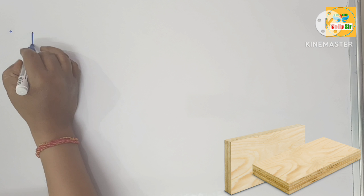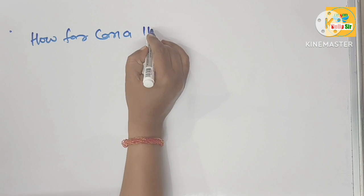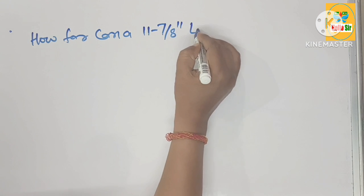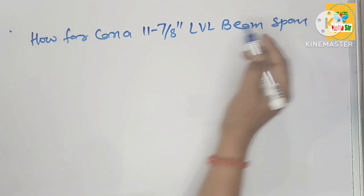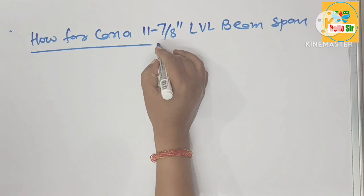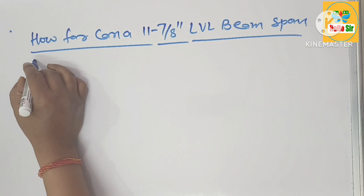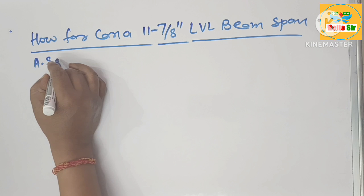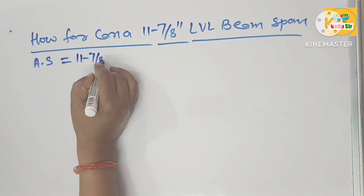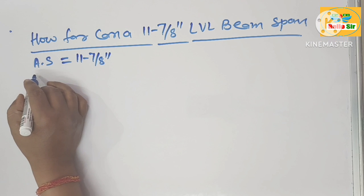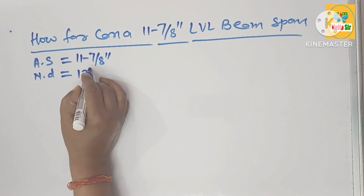In this video we'll learn about how far can an 11 and 7/8 inch LVL beam span without support. In this calculation you'll know about the beam span length. The actual size of this LVL is about 11 and 7/8 inches, and the nominal depth of this LVL is 12 inches.